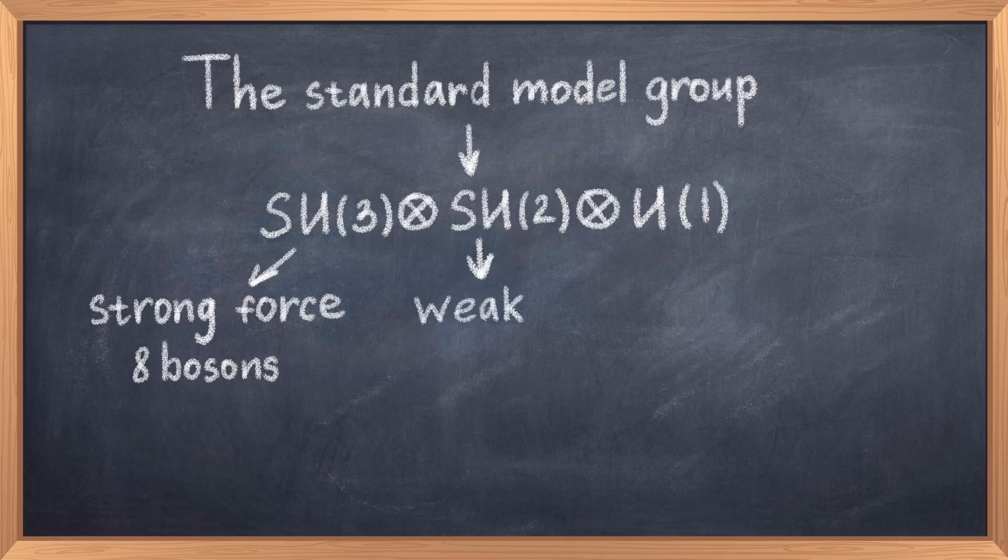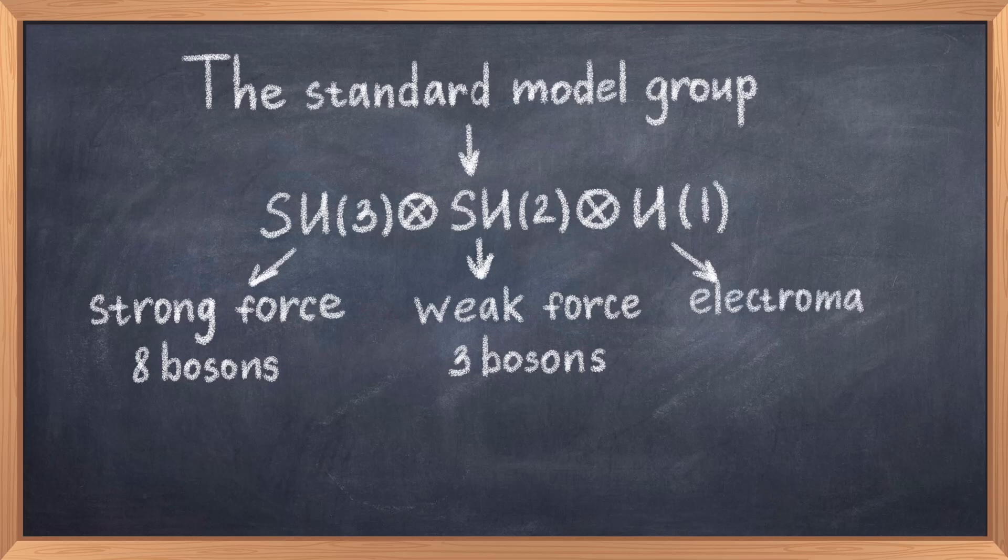Finally, we have the SU(3) group, which as you might have guessed, represents the strong force. And since there are 8 generators, we likewise have 8 gluons as the force carriers of the strong force. Thus from this underlying group theory, we get the underlying structure of the forces behind the Standard Model.